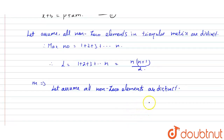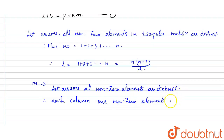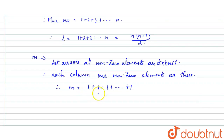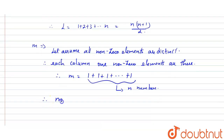Since each column has exactly one non-zero element, the total count goes from the first column (1 value) through the second, third, and up to the last column — giving n terms in total. Therefore m = n.